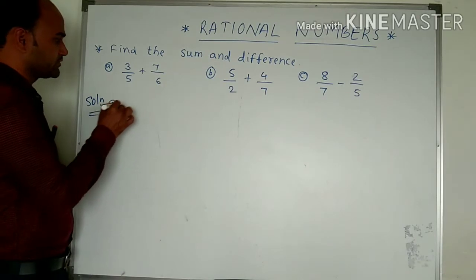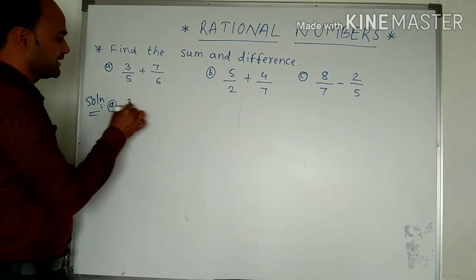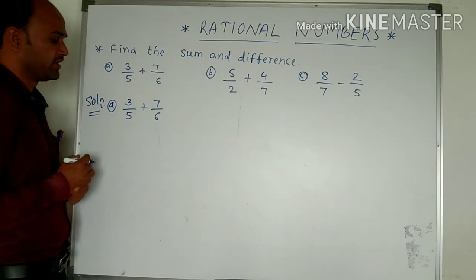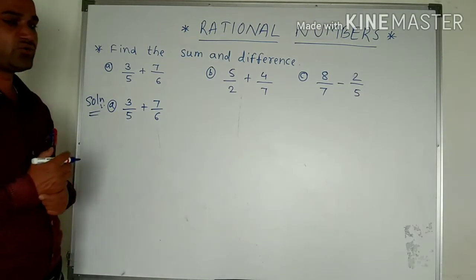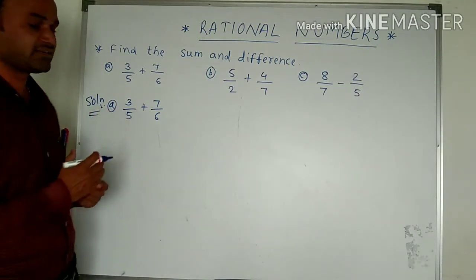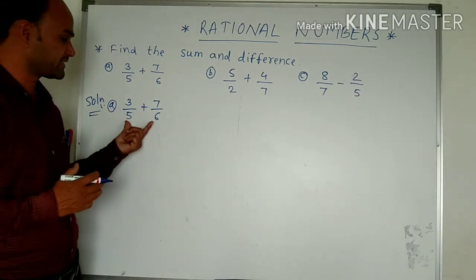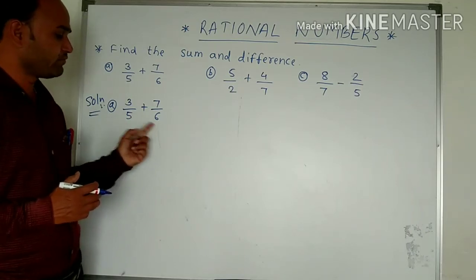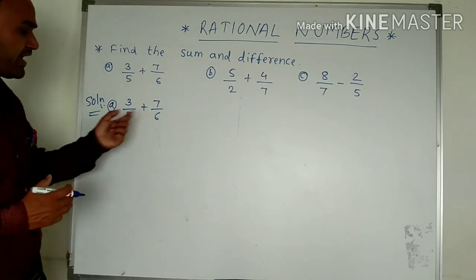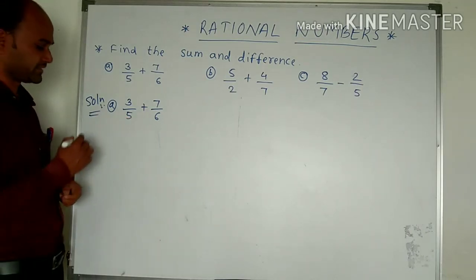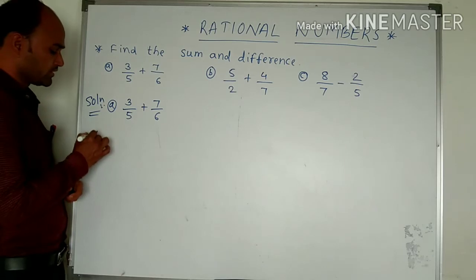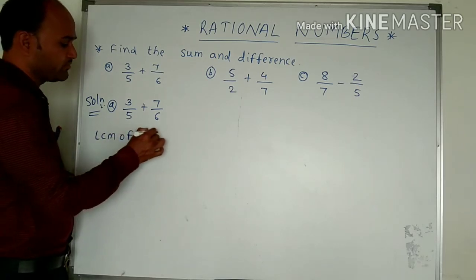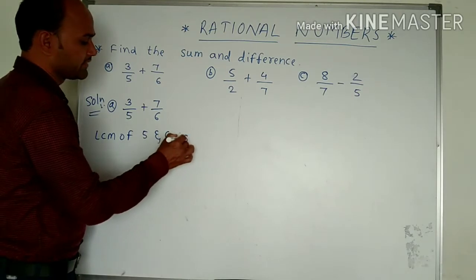We can see the first question solution: 3 upon 5 plus 7 upon 6. What we can do first is we have to make the denominator the same. For making the denominator the same, we have to find out the LCM of 5 and 6. The LCM of 5 and 6 is 30.